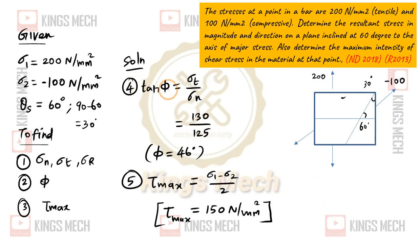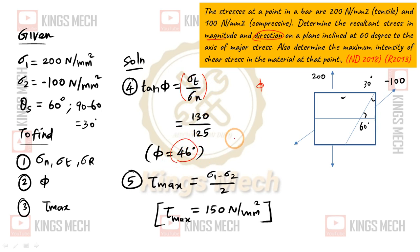And then for the resultant stress in magnitude and direction — the direction angle phi: tan φ = tangential stress divided by normal stress (sigma_t / sigma_n). Taking the inverse tangent gives us 46 degrees. And finally, the tau max formula: tau max = (sigma1 - sigma2)/2, which equals 150 N/mm².